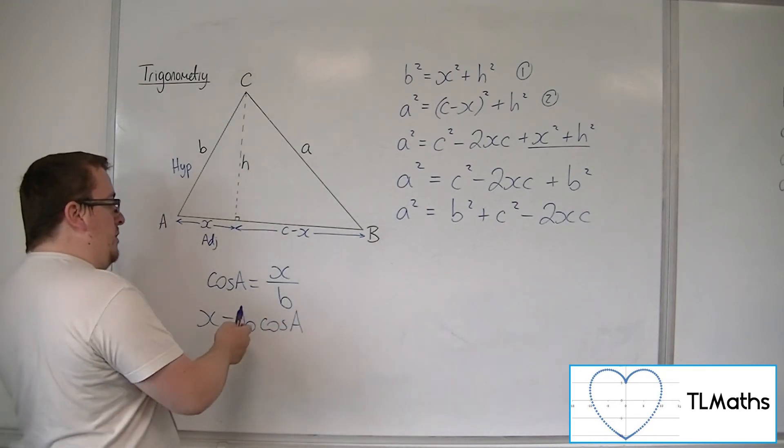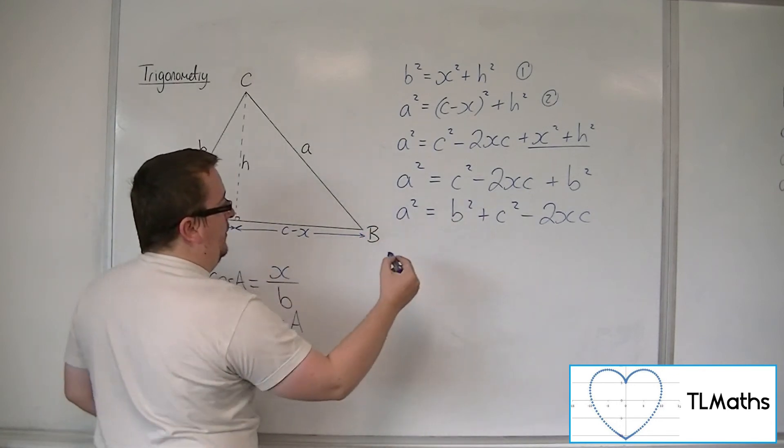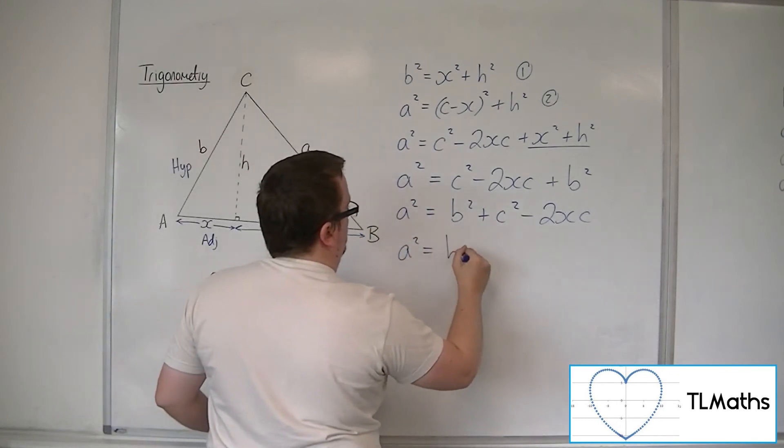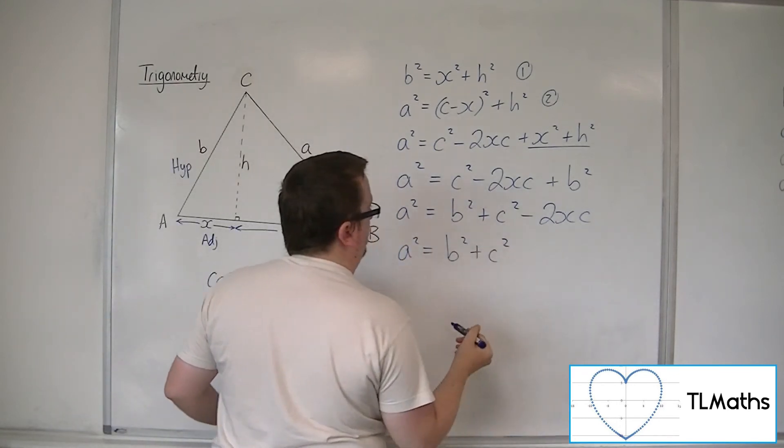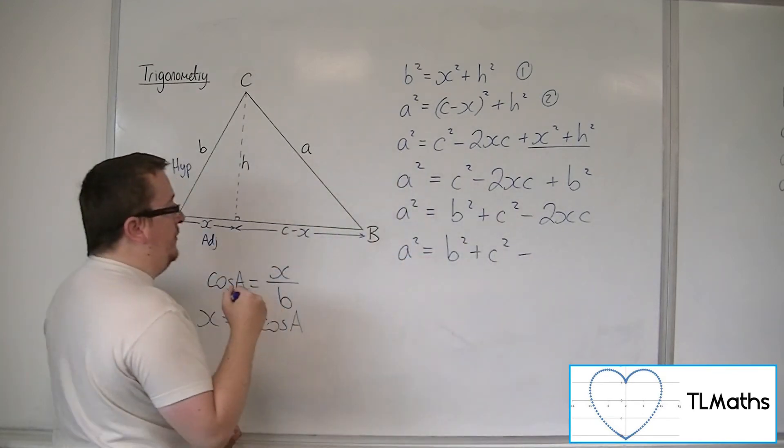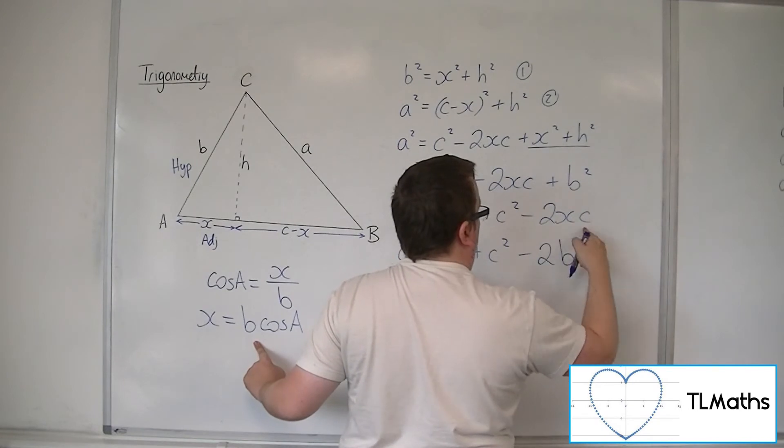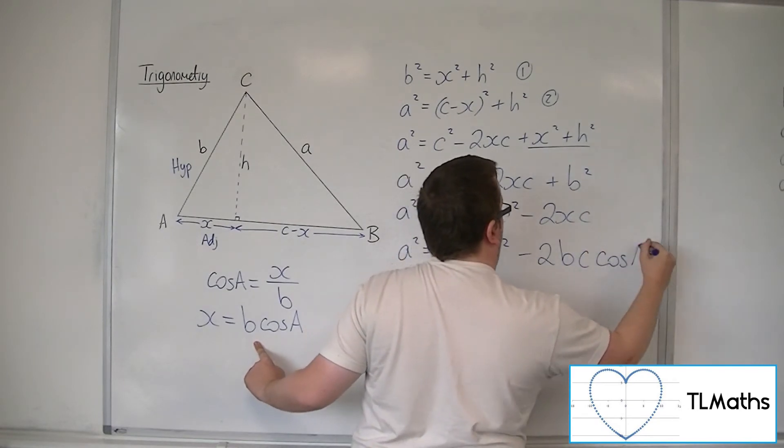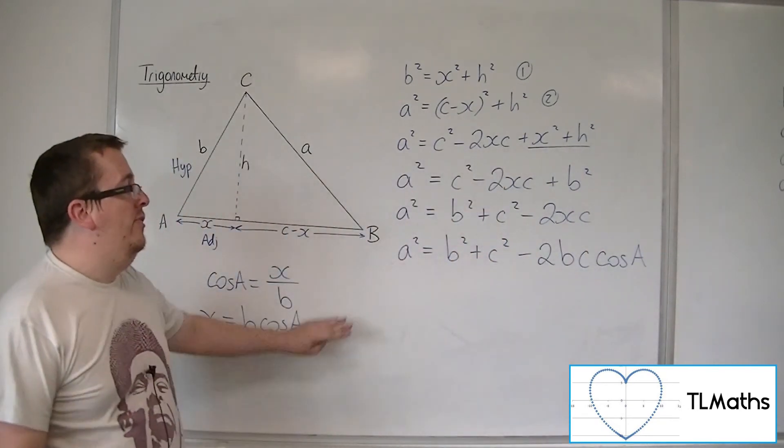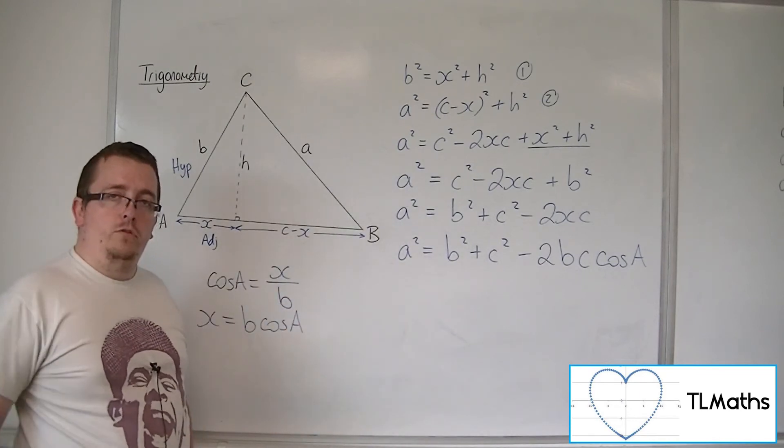So if I substitute that into this, then A squared must be B squared plus C squared minus 2BC cos A. And that is the cosine rule.